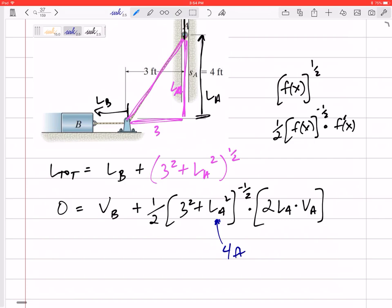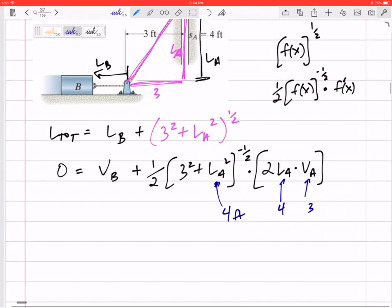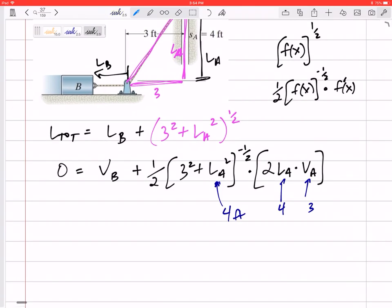All right, so plug in that 4 right there, plug in that 4 right there, plug in this 3 right here. Then I think my only unknown is VB. So a little bit of math and I can solve that VB is negative 2.4 feet per second.